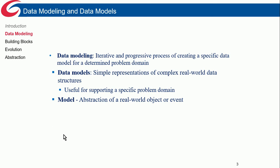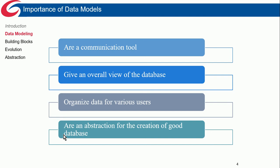Data models are representations of complex real-world data structures. You may be familiar with data structures from programming classes — arrays, hash tables, and so forth. A database is nothing more than a persistent data structure. A model is the abstraction of a real-world object or event, designed to make it easier to communicate with users and developers so everyone can visualize the design.